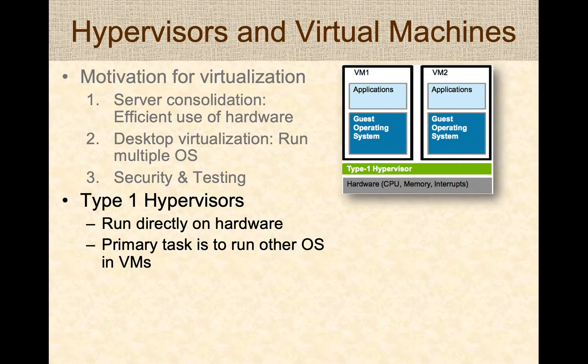There are two types of hypervisors. Type 1 hypervisor runs directly on hardware, also called bare metal. The primary task of a Type 1 hypervisor is to run other guest operating systems in virtual machines.